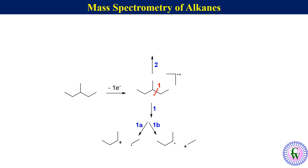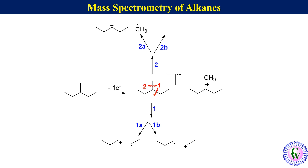Path 2 involves breaking the other C–C bond, and this cleavage is also of two types. In type 2a, the shared electron moves to the methyl group, leading to the formation of a methyl radical and a pent-3-yl carbocation. In type 2b, the shared electron moves to the pentyl group, leading to the formation of a pent-3-yl radical and a methyl carbocation. The m/z values of these carbocations are 86, 71, 57, 29, and 15.